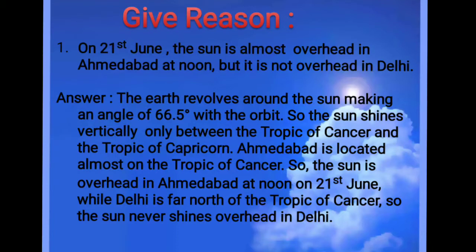That is why at noon the sun appears much stronger and its heat is more intense because the sun is closer to us. Delhi is a little farther away, so the sun's rays do not fall vertically there — they are slanting and therefore comparatively less intense. That is why the sun is not directly overhead in Delhi.